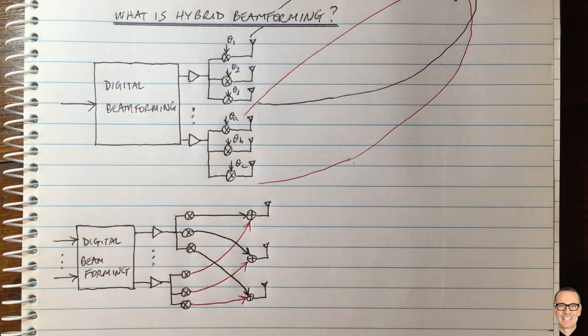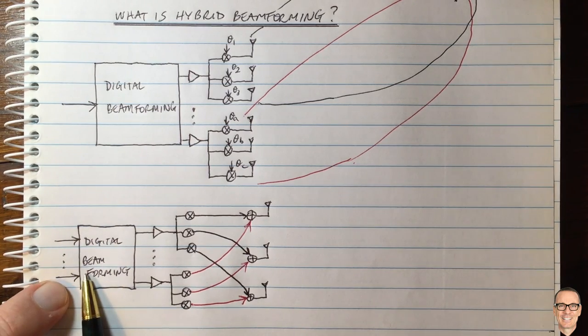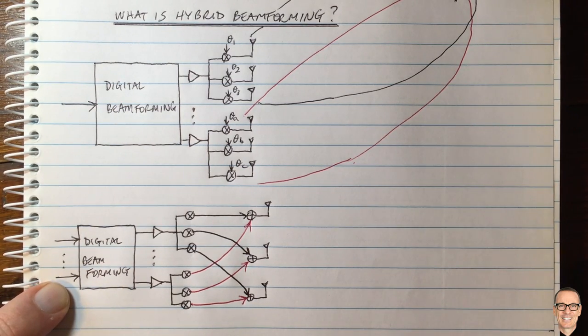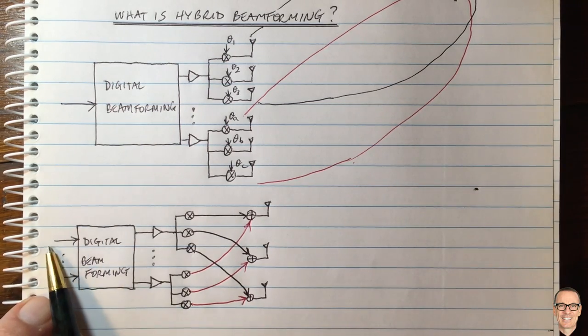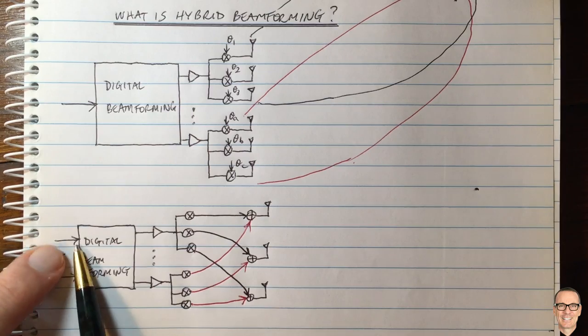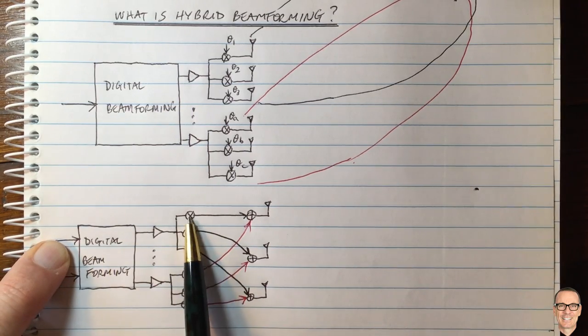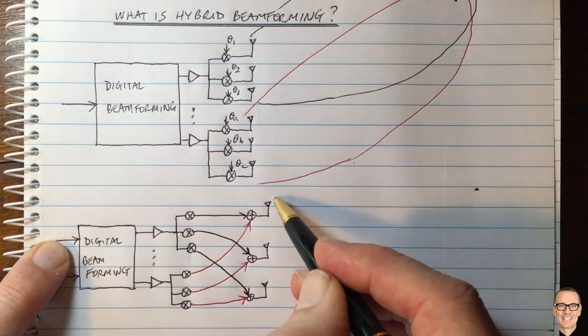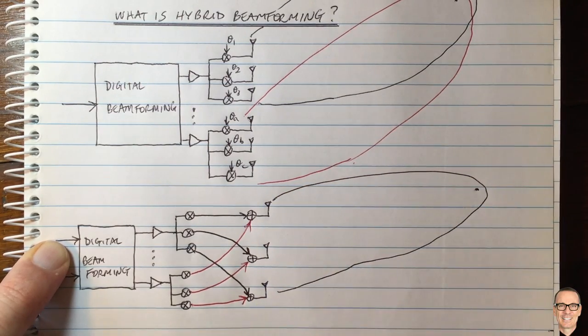What does this enable us to do? It enables us to start having multi-user systems. So each of these streams coming in here could be intended for a different user. For example there was a user over here and the first stream is intended for that user, then it could be beamformed analog here to form a beam in that direction of that user across all of the antennas.